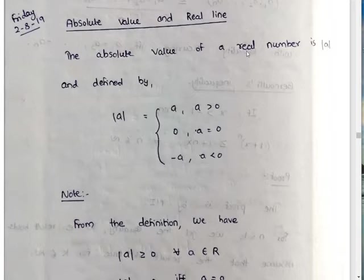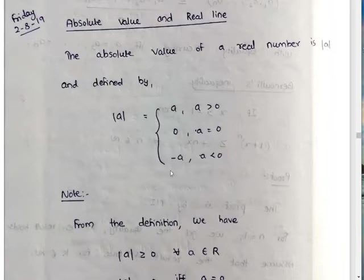The absolute value of a real number A is mod A, defined by: mod A equals A if A greater than 0, equals 0 if A equals 0, and equals minus A if A less than 0.